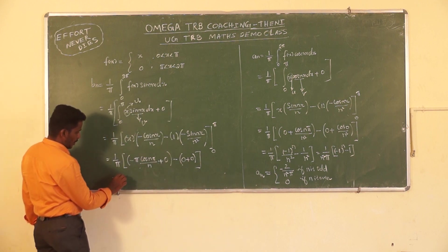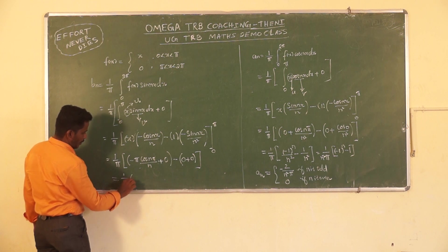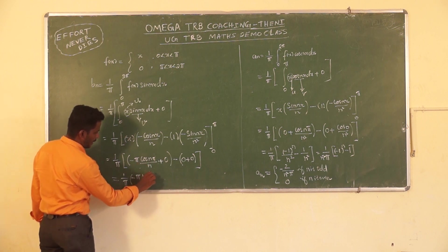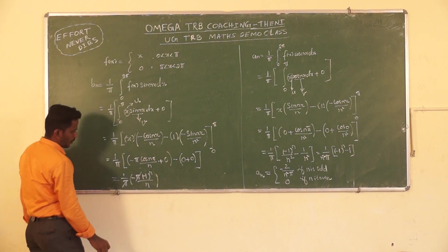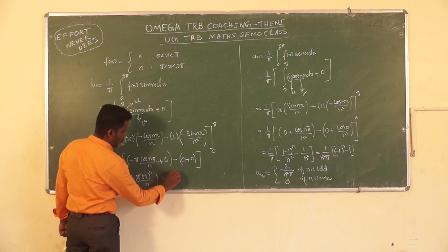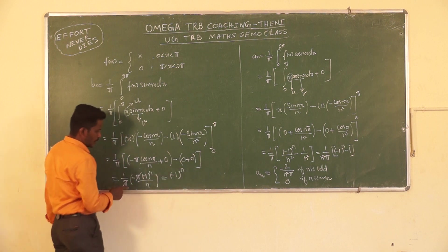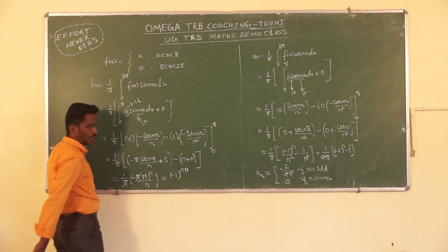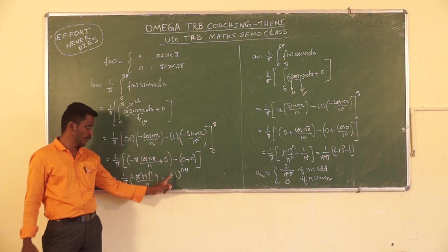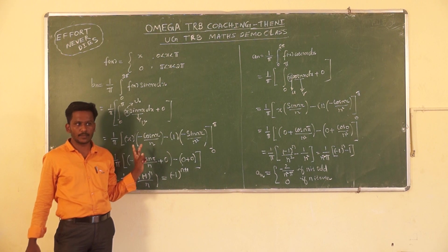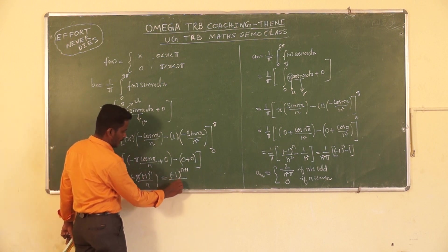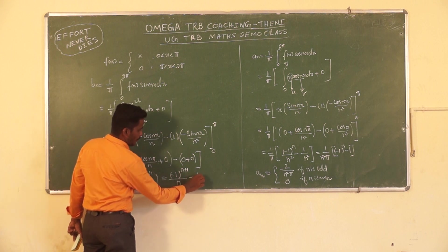So that is equal to (1/π) × [−π·cos(nπ)/n]. Since cos(nπ) = (−1)^n, the π cancels, giving −(−1)^n / n. Simplifying: 2 × (−1)^(n+1) / n, which is nothing but (−1)^(n+1) / n. This is bₙ.